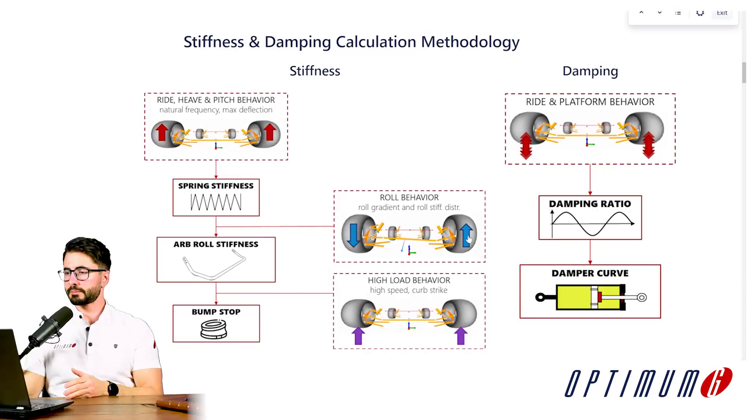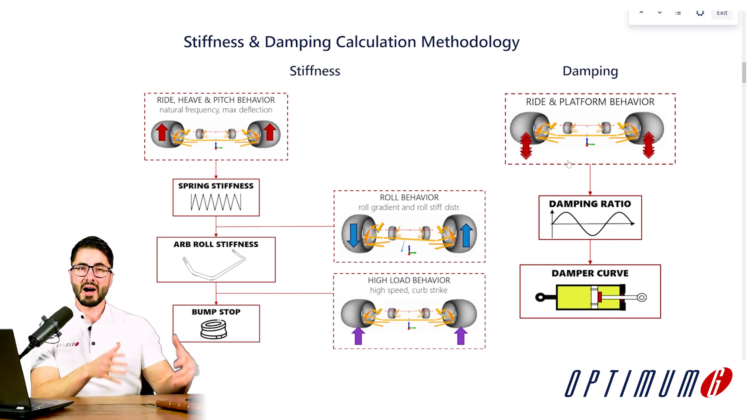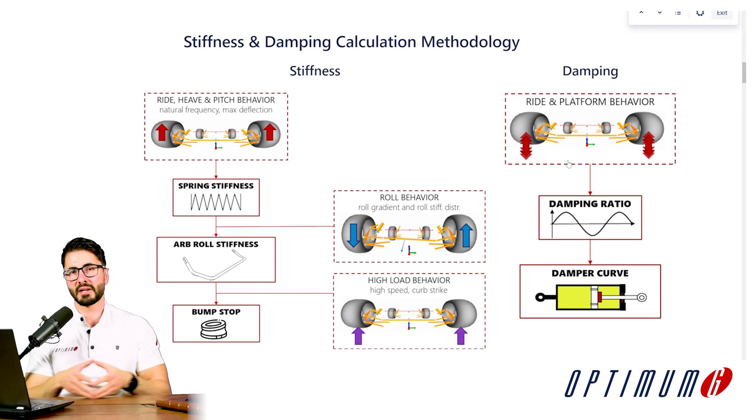Now that we have the stiffness completed then we can move on to determining the damping characteristics and damper curves that you would like to have in your race car. So first we define what is the ride and platform behavior that we expect from our car. Do we want it to have a better ride over curves, ride over bumps and mechanical grip or do we expect it to have a really good platform control?